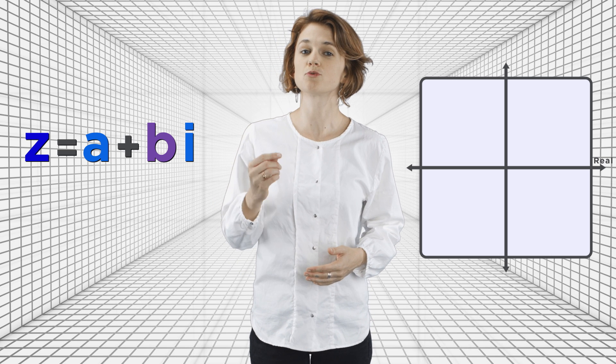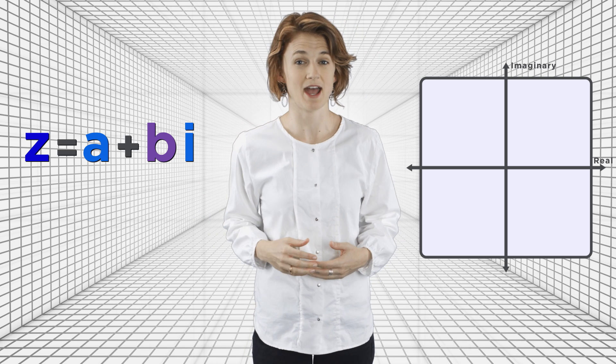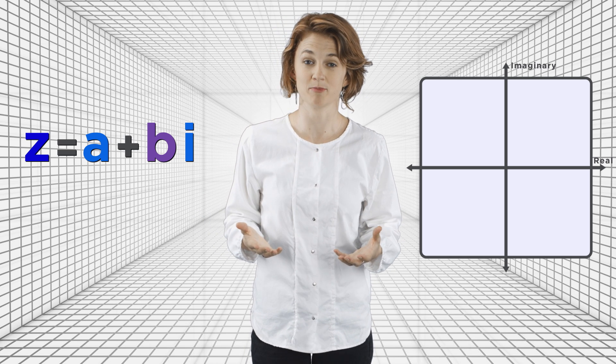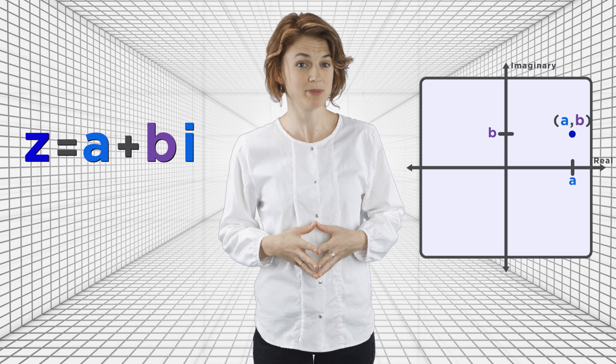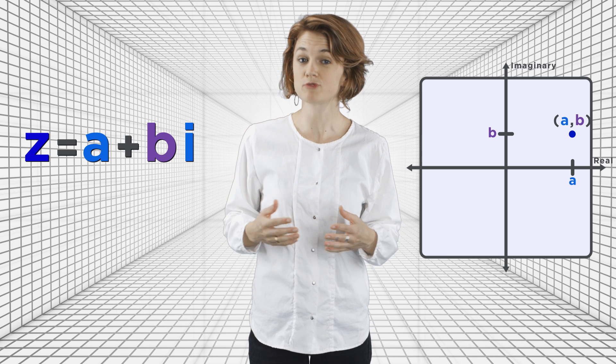Because complex numbers have two parts, it's very natural to represent them in two dimensions. The distance along the horizontal axis, also called the real axis, denotes the real part of a complex number. And the distance along the vertical axis, also called the imaginary axis, denotes the imaginary part. The complex number a plus bi can be thought of geometrically as the point a comma b on the two-dimensional real plane.